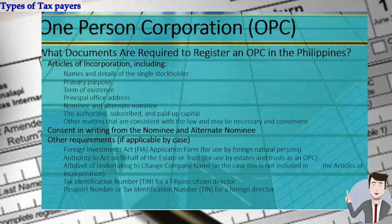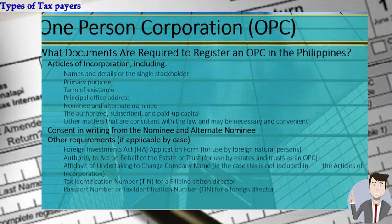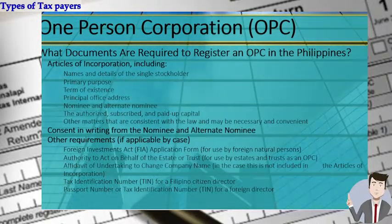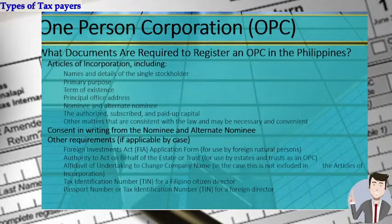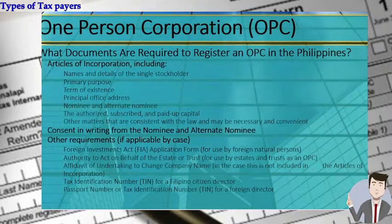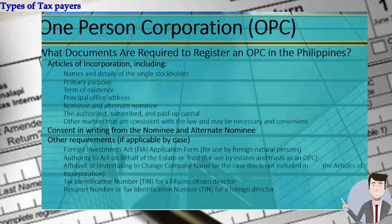To register an OPC in the Philippines, you must comply with the articles of incorporation — same as a regular corporation — provide consent in writing from the nominee and alternate nominee, and other requirements. We will not go deeper into formalities and requirements; this is just an overview to give you an idea of how to form an OPC.